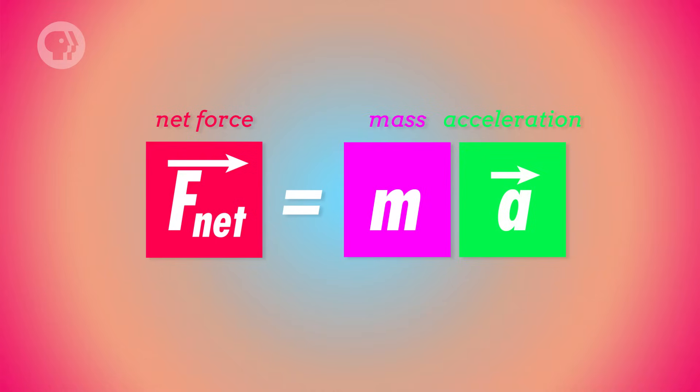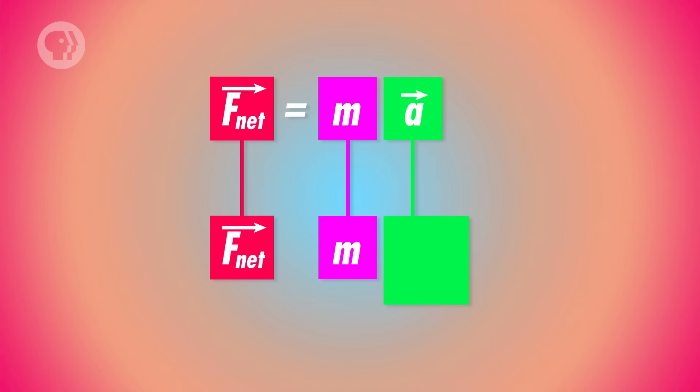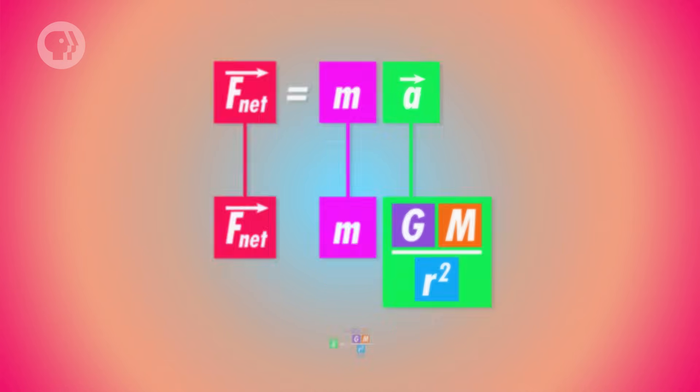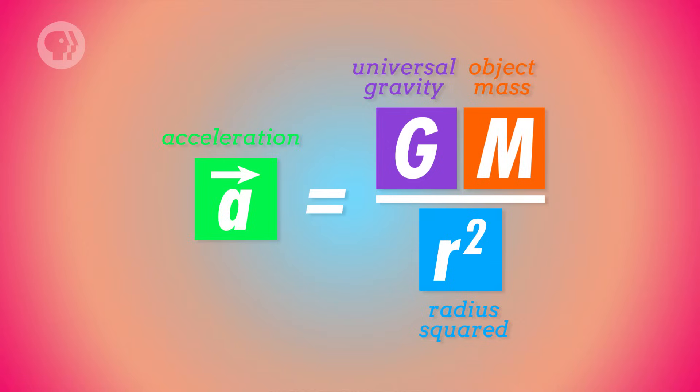There's one more thing we should point out about the law of universal gravitation, which is that it fits what we expect the equation for a net force to look like. From Newton's second law of motion, we know that a net force is equal to mass times acceleration. What the law of universal gravitation is saying is that when the net force acting on an object comes from gravity, the acceleration is equal to the mass of the bigger object, like Earth, divided by the distance between the two objects times big G. So small g is actually equal to big G times Earth's mass divided by Earth's radius squared.